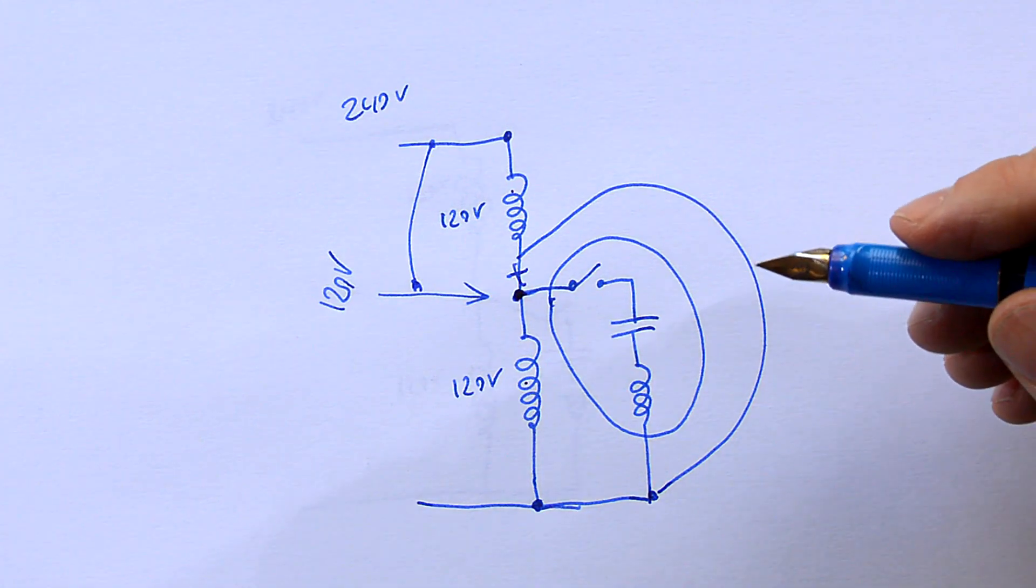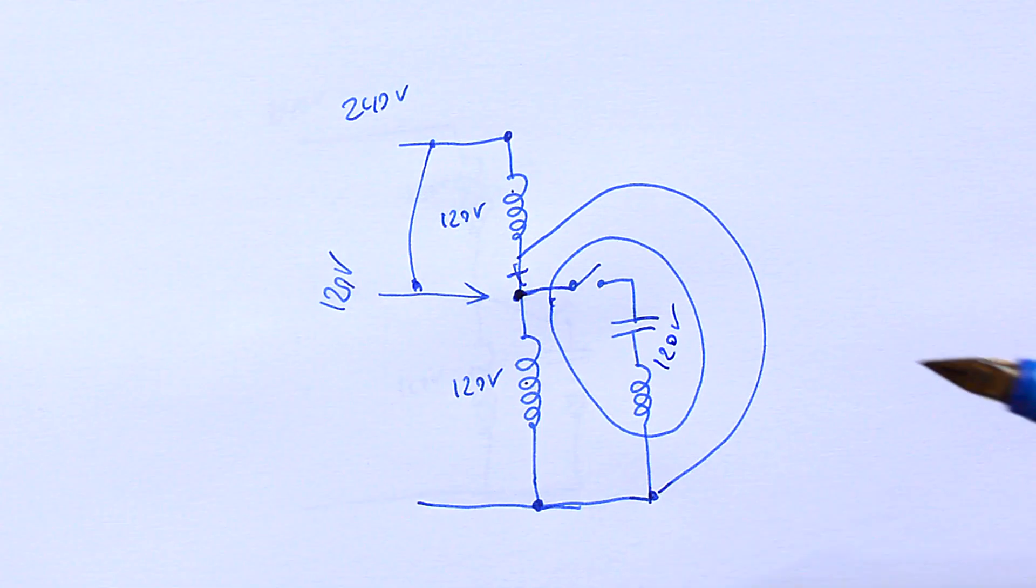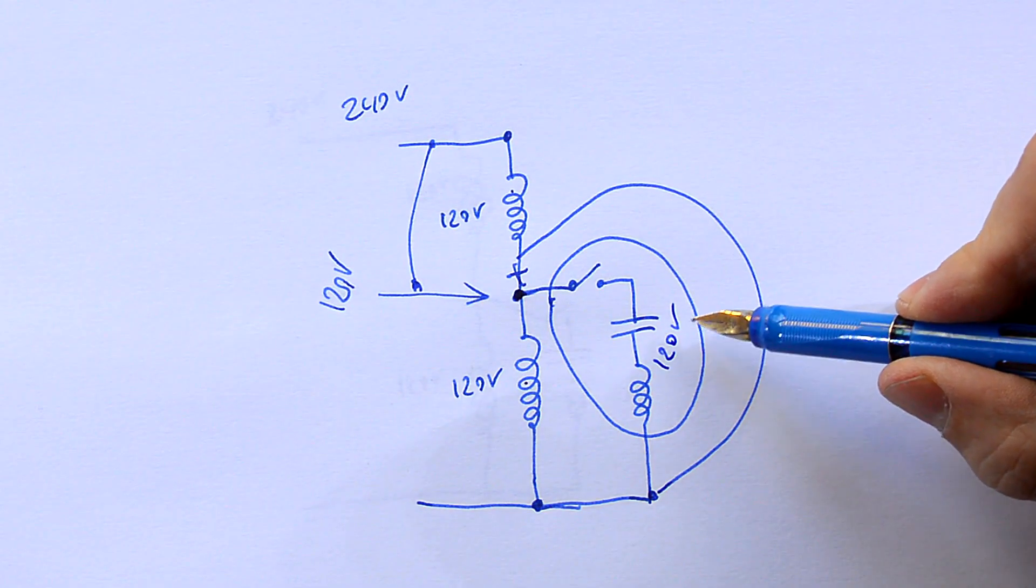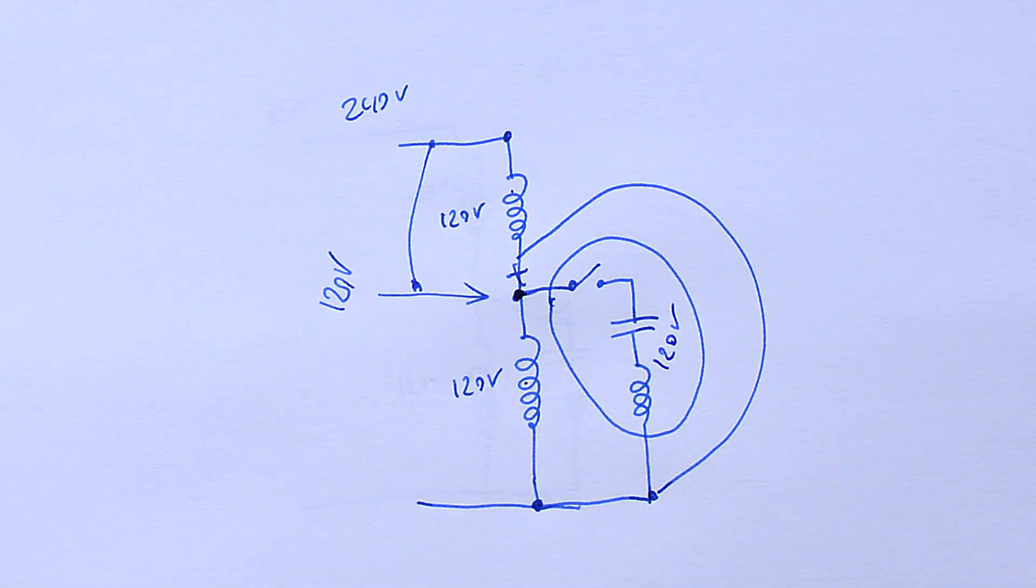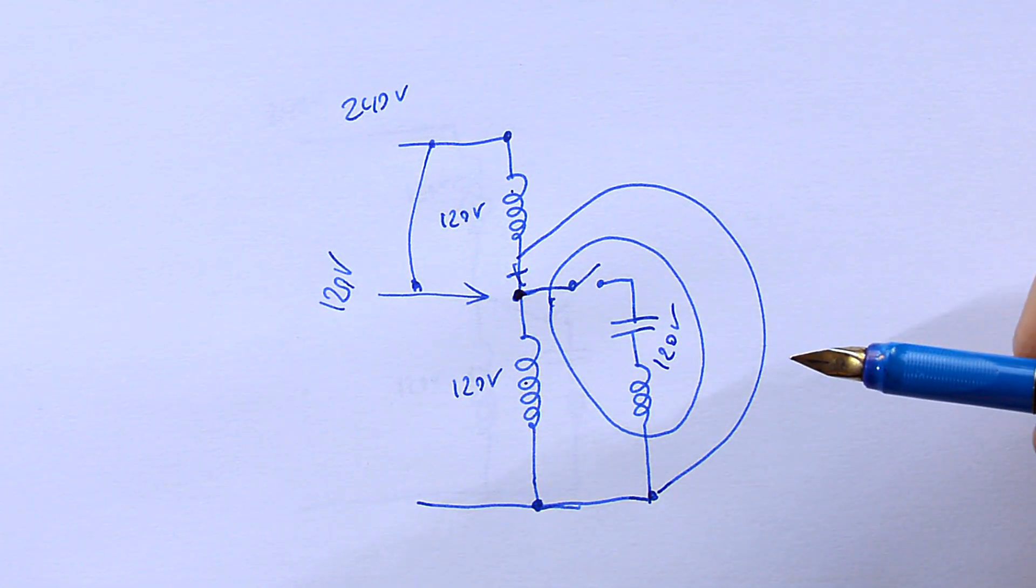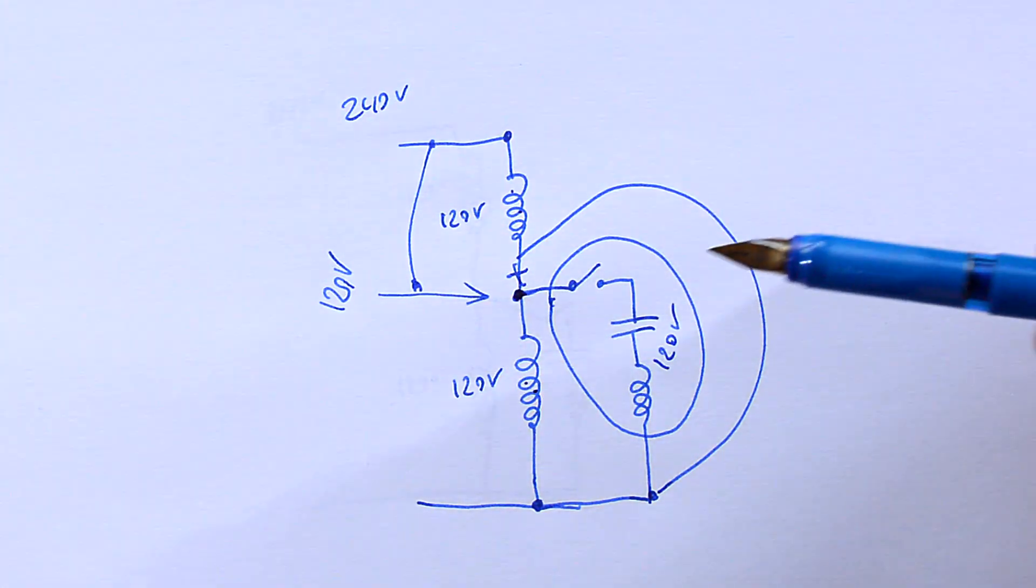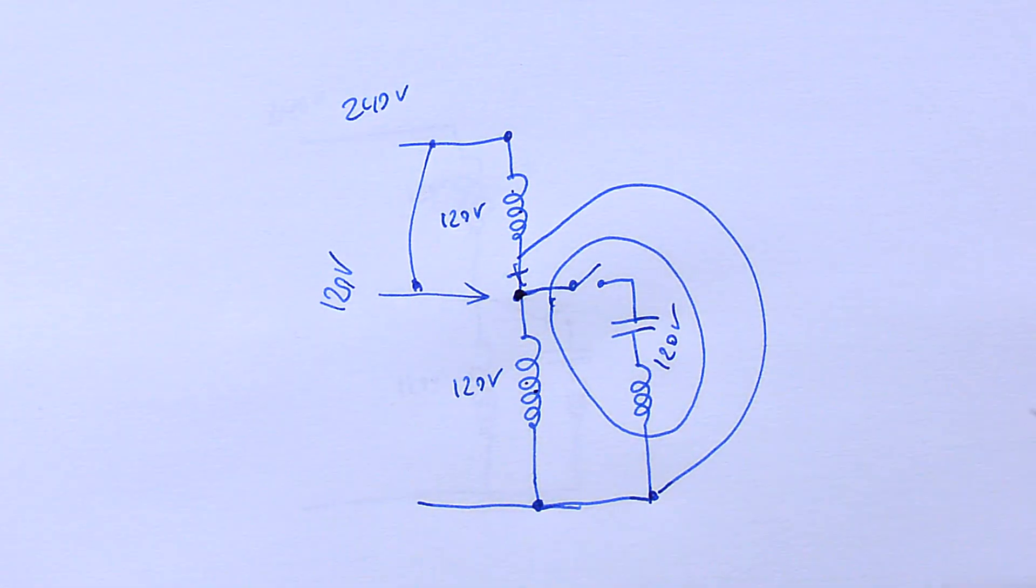And why does it work this way? Well this starter circuit here is a 120 volt circuit. And the reason it's 120 volts is if we're running the motor at 120 volts we don't have any more available than that. But if we're running the motor at 240 volts it's using these two coils inside the motor actually as an auto transformer to make the 120 volts from the 240 volts.